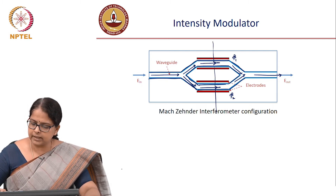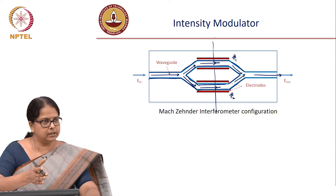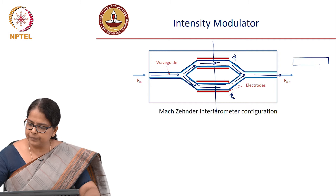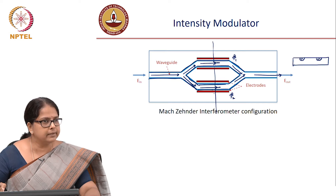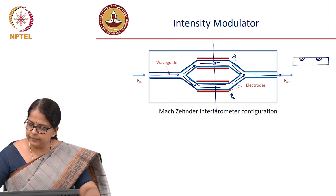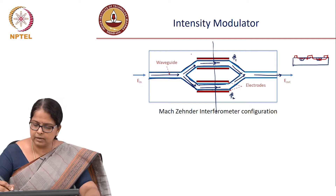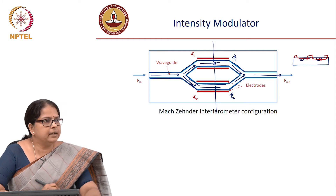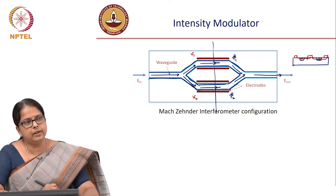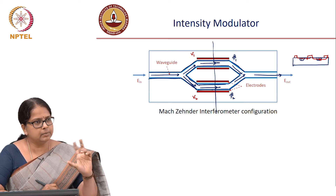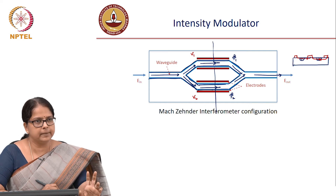If you take a cross-section of the waveguide at the electrode region, you will see two waveguides surrounded by electrodes. There is an electrode on the left, one between them, and one on the right, creating electric fields across each arm. You can call these V1 and V2. You can apply voltage only at V1, or at both V1 and V2, or apply opposite voltages — V1 equal to minus V2. This modulator will have an optical input, an optical output, and an RF input through which you apply the voltage.